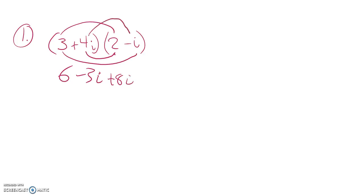And then this last multiplication, 4i times negative i is negative 4i squared. But I know i squared is negative 1, so this is negative 4 times negative 1, which is positive 4.